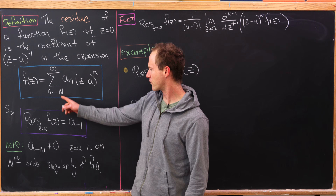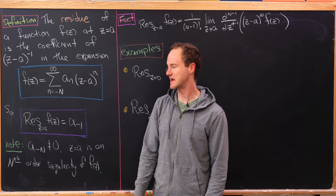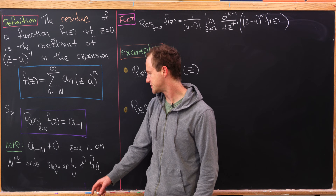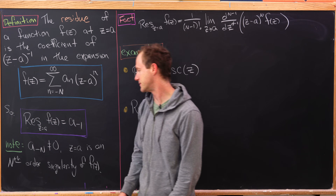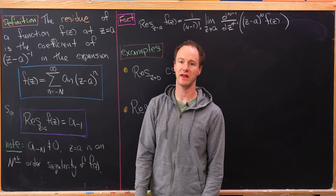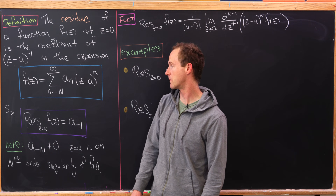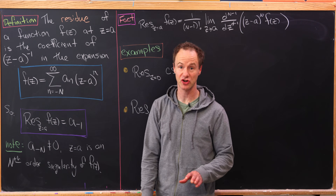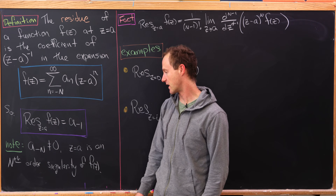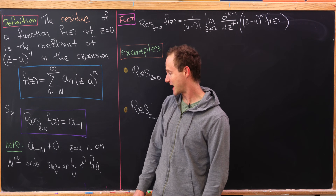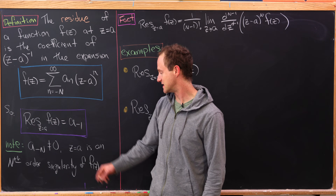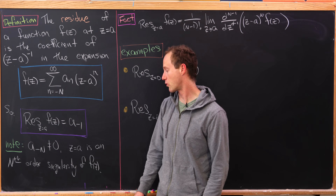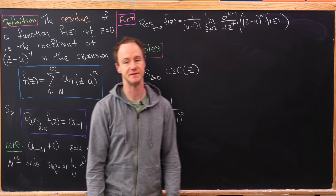We've written this starting at negative capital N, assuming that a_{-N} is not zero, so that means the sum really starts at that lowest point. In that case we'll say that z equals a is a so-called Nth order singularity of f(z).